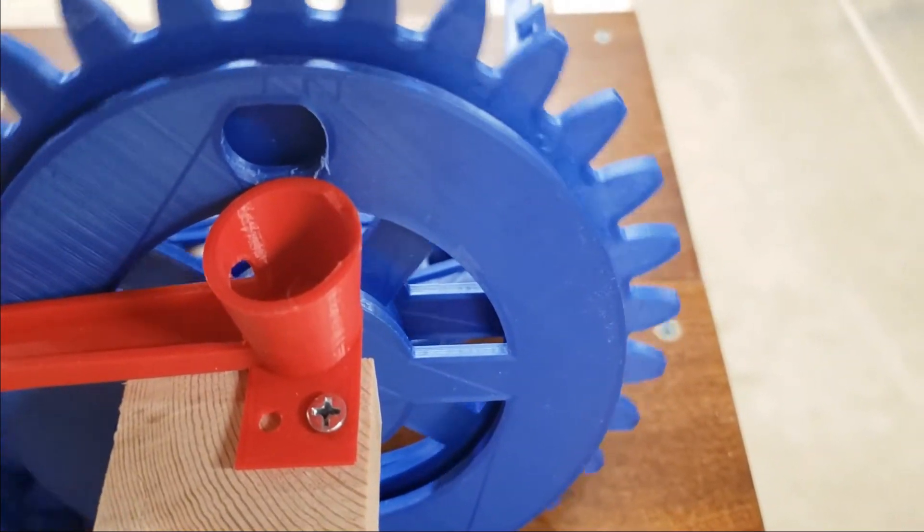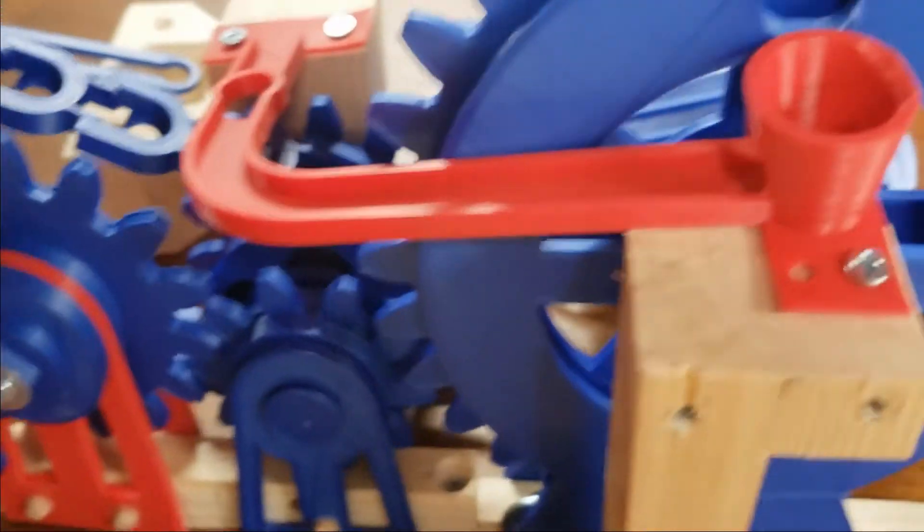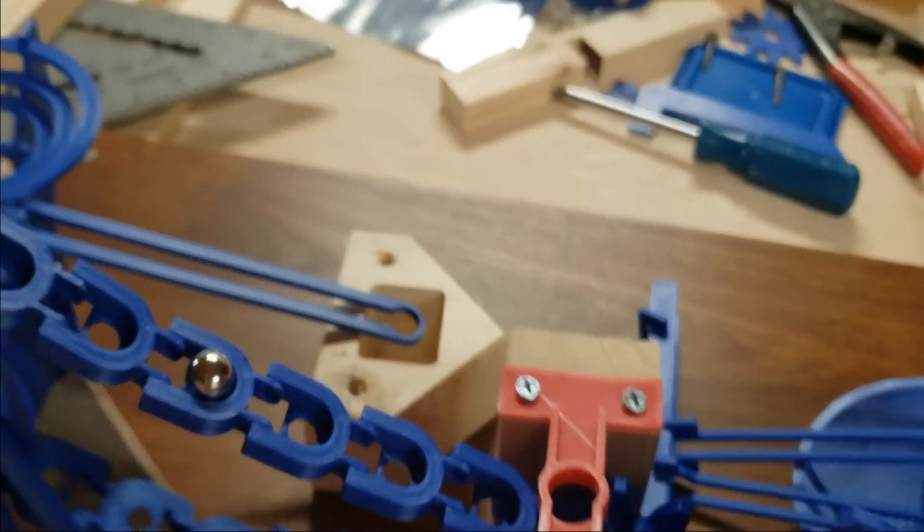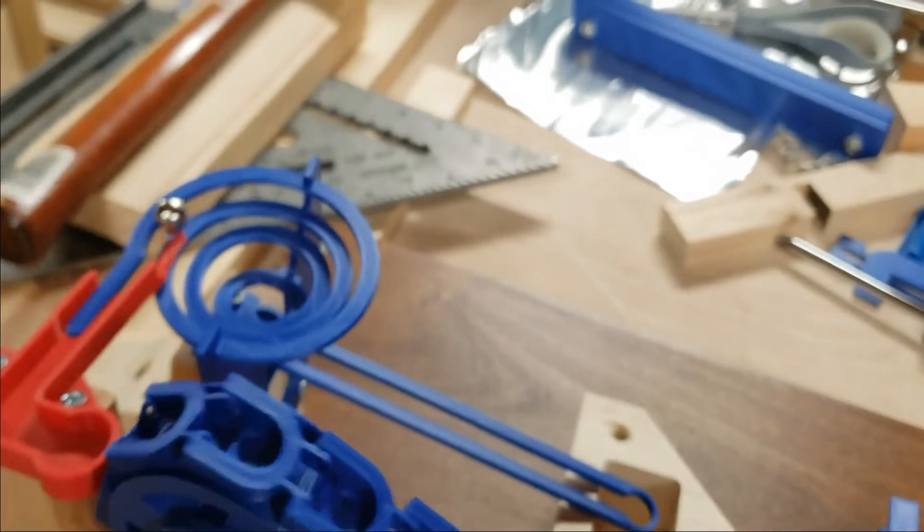If we watch again you can see the ball drops into the bucket, runs down the chute, falls into the chain, goes down the spiral and then it overshoots its target.